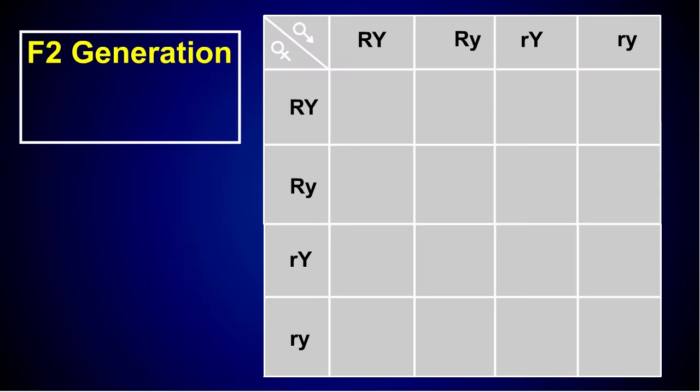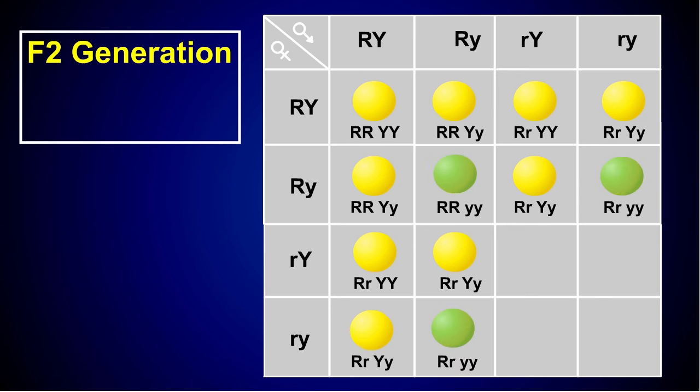A Punnett square is created to determine the F2 generation that results from this cross. Of the offspring produced within the F2 generation, nine are round yellow peas, three are round green peas, three are wrinkled yellow peas, and one is a wrinkled green pea. In other words, a 9 to 3 to 3 to 1 ratio exists within the F2 generation.